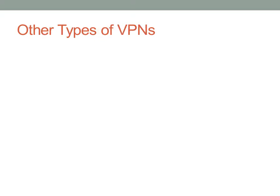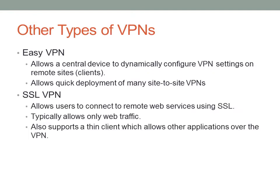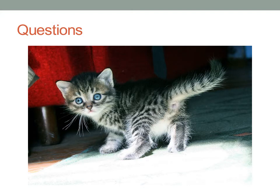There are some other types of VPNs you should know about for the CCNA. EasyVPN basically allows a number of VPN clients to go out to a VPN server to get their configuration, which is really nice when you need to do a lot of different site-to-site VPNs. There's also SSL VPN, which allows users to connect to web services using SSL. It only allows web traffic typically, but it also supports a thin client, which allows other applications over the VPN. That just about wraps it up for the CCNA training and this presentation — if you have any questions or comments, leave them below.